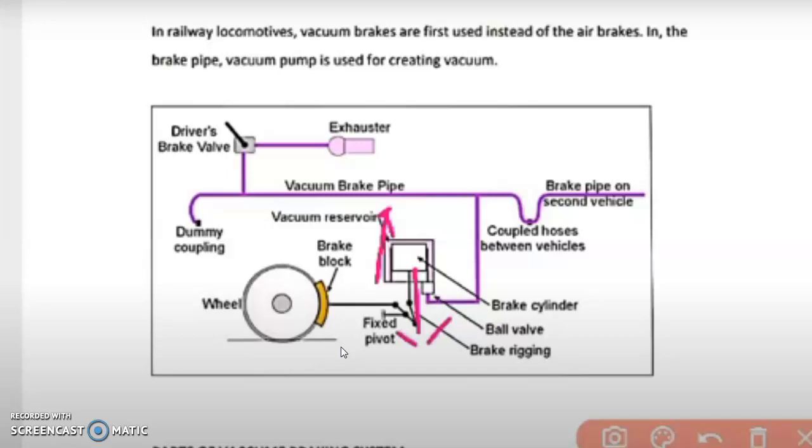That is the reason why this vacuum braking system is extensively used in railway locomotives. Other advantages you can find: it is cheaper than hydraulic braking system or air assisted hydraulic braking system, and the maintenance cost of this vacuum braking system in comparison to other braking systems is less. The manufacturing cost is also less.